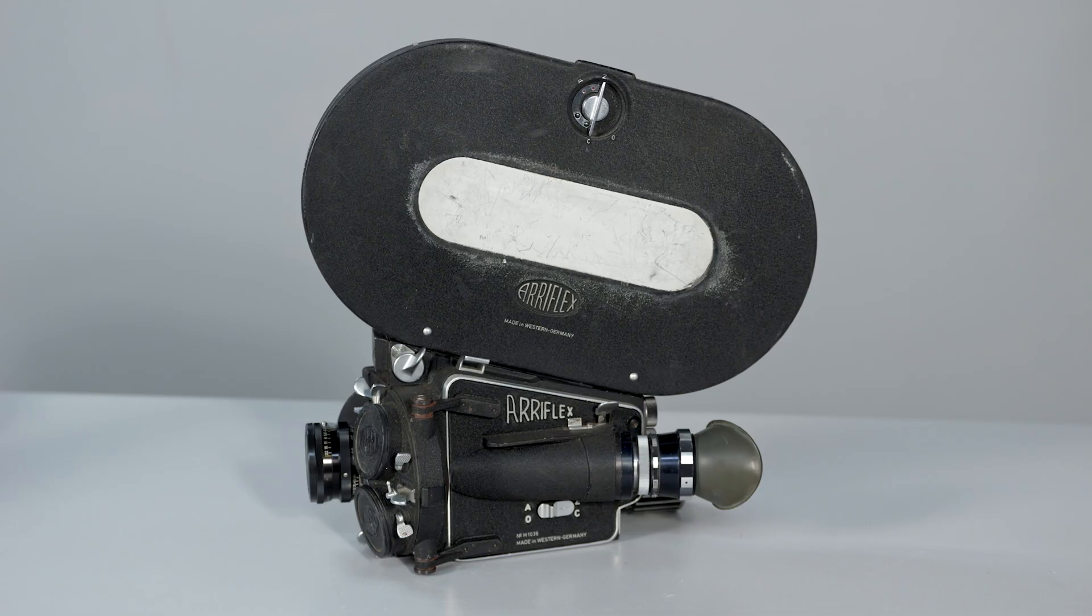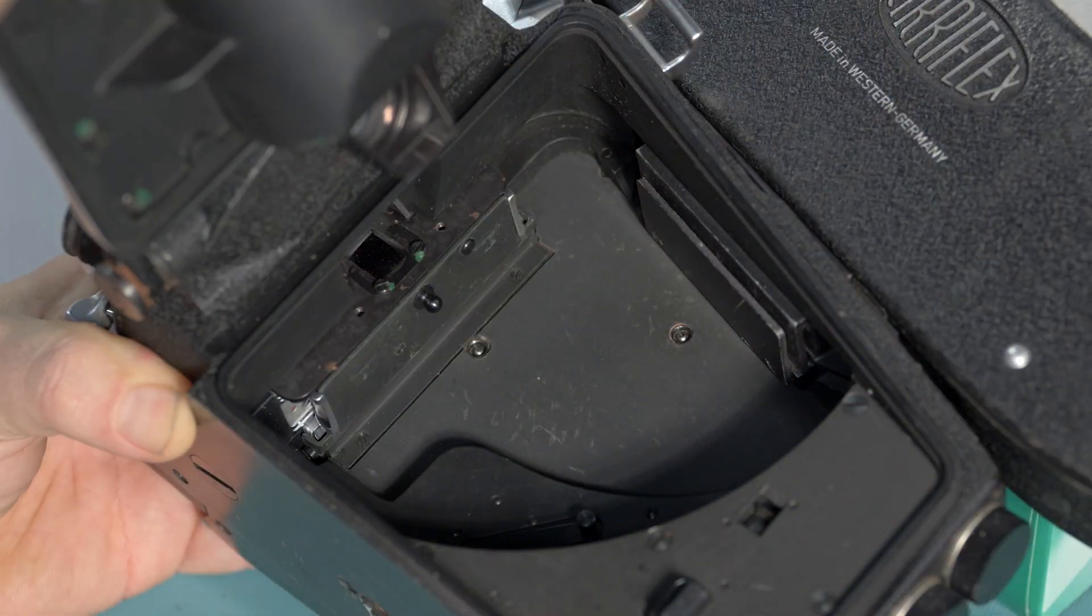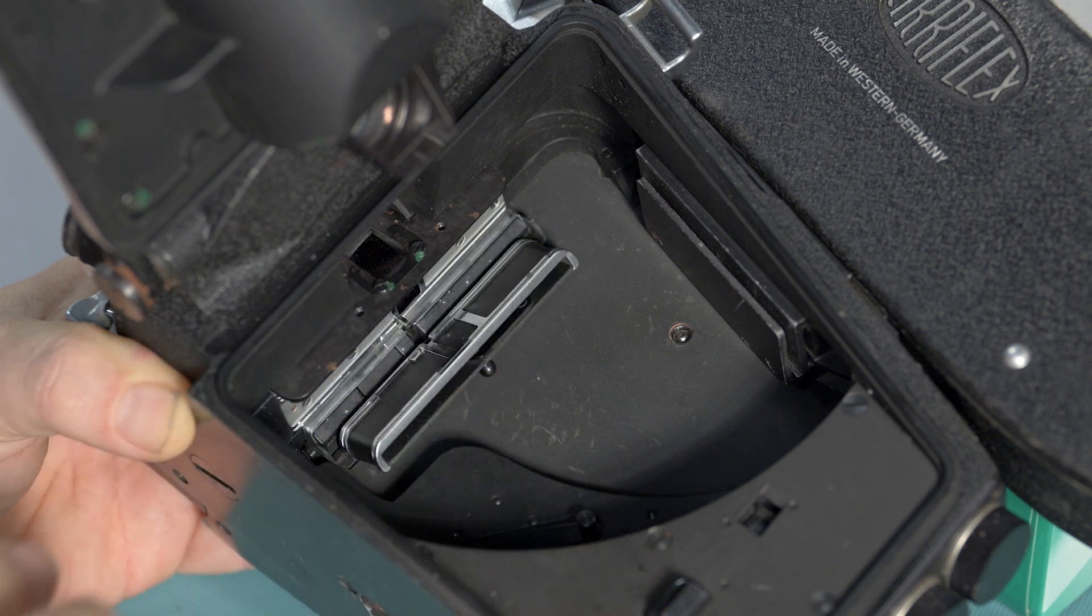Probably the best suited would be the Arriflex 16M. It's got a great film movement and lots of space behind the gate. The problem is I'd hate to cannibalize a working camera, since they get more difficult to find each year.